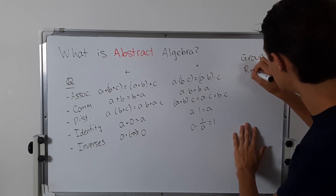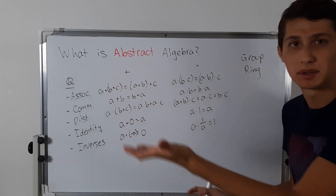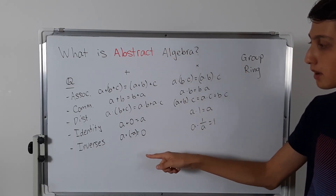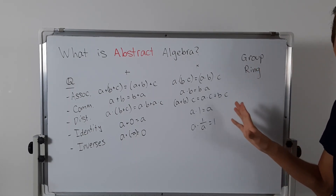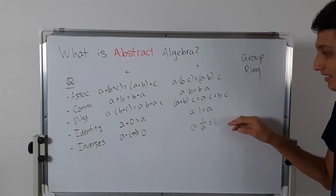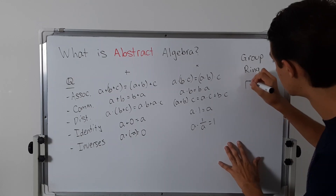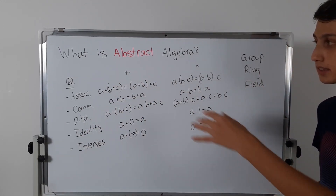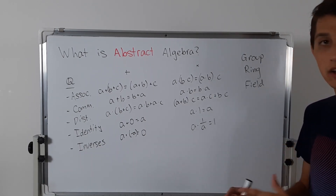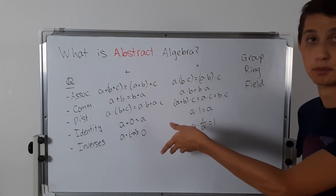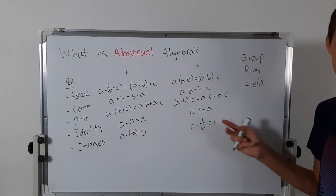A ring has two operations — addition and multiplication — with addition typically being the primary one. It has all the addition group properties as well as associativity and identity for multiplication. Sometimes a ring might not have multiplicative identity depending on the definition. A field actually contains all of these properties. The rational numbers, real numbers, and complex numbers are all fields. The integers are not a field — they lack multiplicative inverses — so they're more like a group for addition, not a full ring.